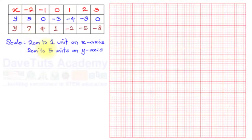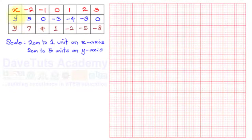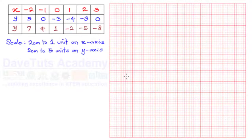Here is our table of values. The scale is 2 cm to 1 unit on the x-axis and 2 cm to 5 units on the y-axis. For x, the range is -2 to 3, so it's roughly centralized around the origin. For y, the highest value is 7 and the lowest is -8, also roughly centralized. I'll find the center of the graph to place the origin, centralizing both the y-axis and x-axis accordingly.